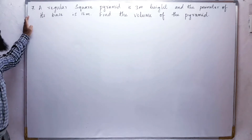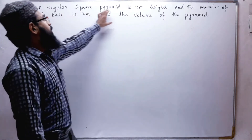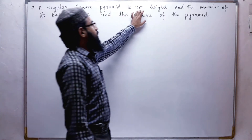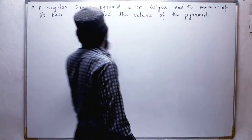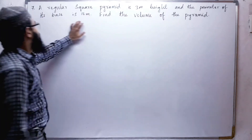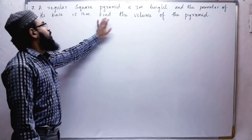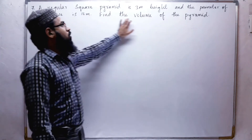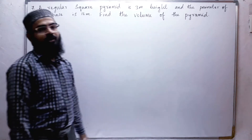Seventh problem. A regular square pyramid is 3 meters in height and the perimeter of its base is 16 meters. Find the volume of the pyramid.